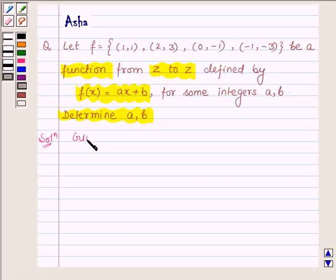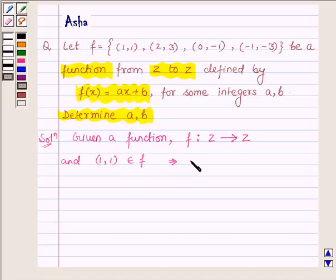Here we are given a function f from Z to Z. And the ordered pair (1,1) belongs to the function f. This implies f(1) = 1.